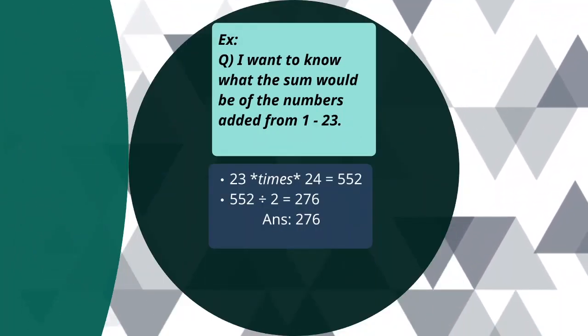Now onto our second example. My question is, I want to know what the sum would be of the numbers added from 1 to 23. So our first step is to multiply the number one more than itself.